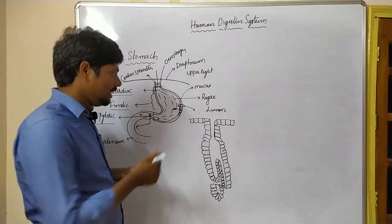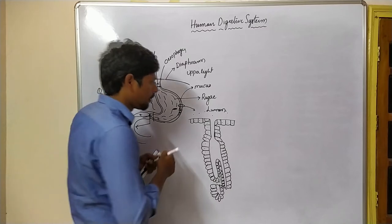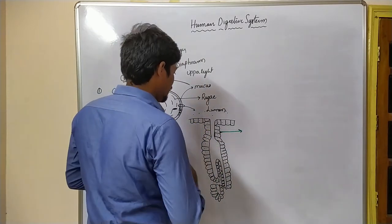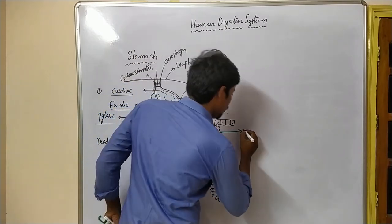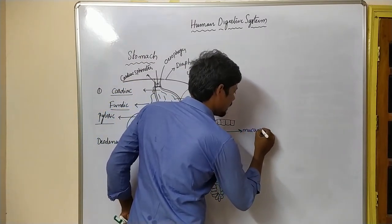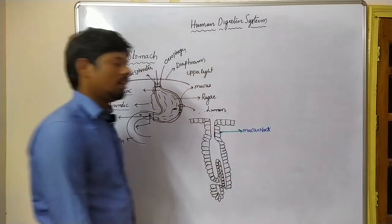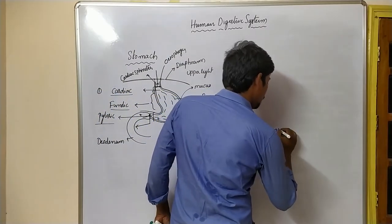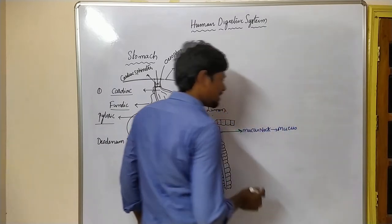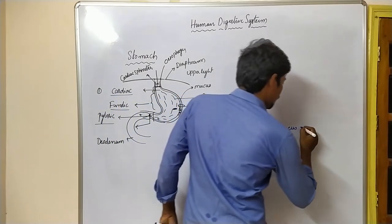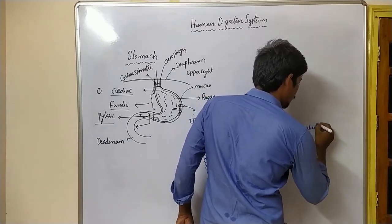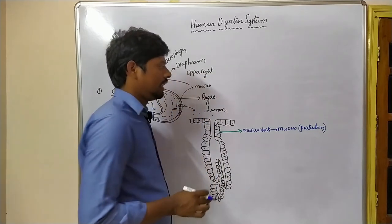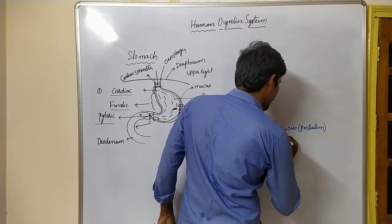There are different kinds of cells. These cells are called mucous neck cells. Mucous neck cells produce the mucus, which is essential for the protection of the stomach's internal structure, and also produce bicarbonates.